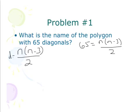What I'm going to do here is I'm going to multiply by 2 on both sides. I get 130 equals n, and I'll distribute it. So we'll get n squared minus 3n.